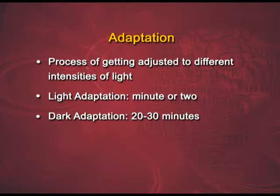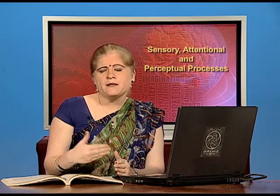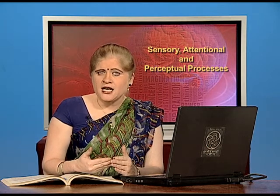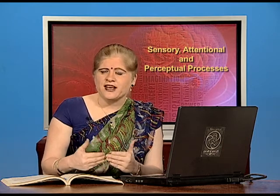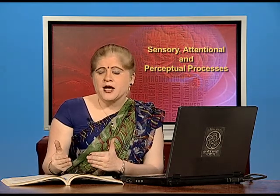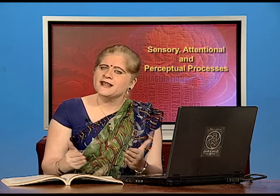The dark adaptation takes 20–30 minutes. However, light adaptation occurs very quickly. This is done through a chemical process. The rods have a photosensitive chemical substance known as rhodopsin or visual purple. The molecules of this substance get bleached in bright light, so you are able to see in the light. In dark, with the help of vitamin A, the rhodopsin is regenerated and reconstructed, so you are able to see in the dark. But the regeneration is a longer process. Therefore, dark adaptation is longer than light adaptation.